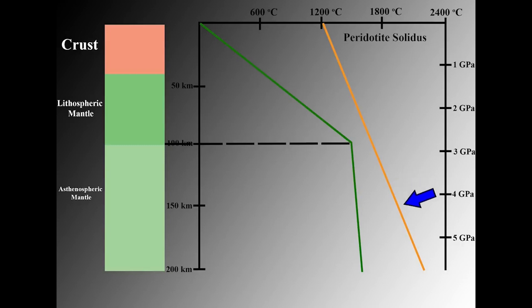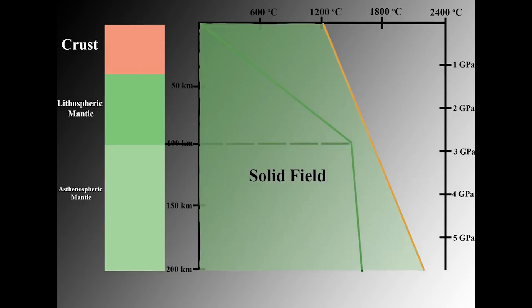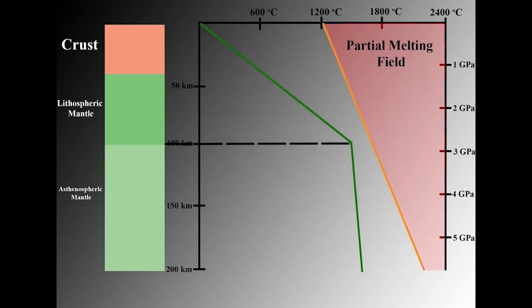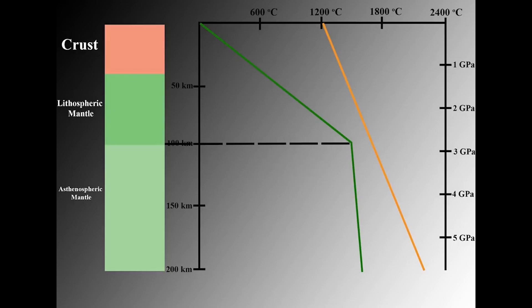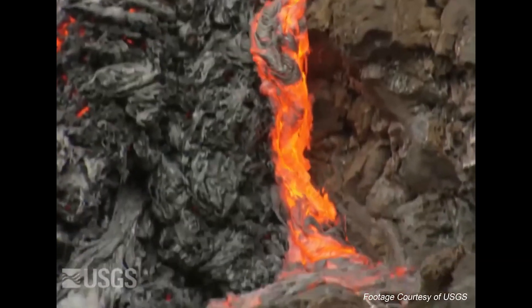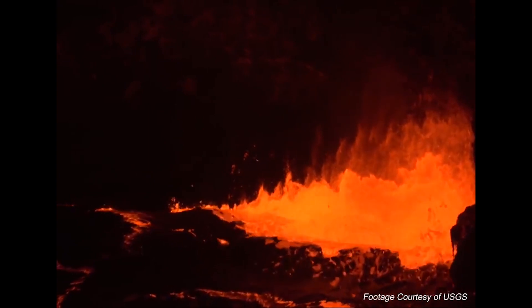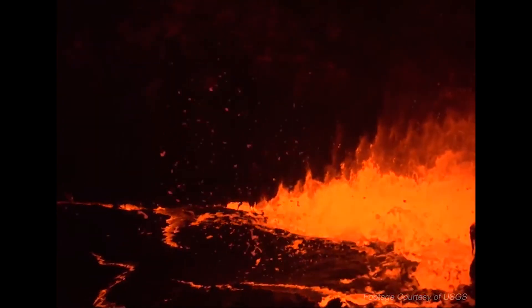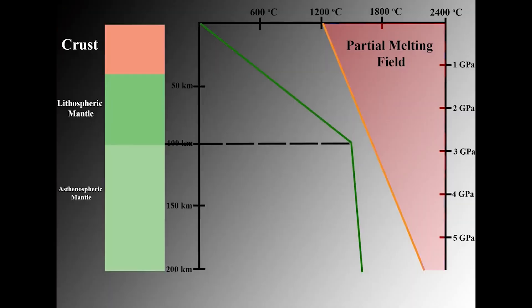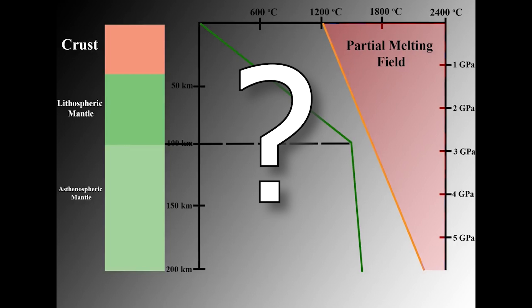The melting point of peridotite varies with pressure and depth in the earth, and is represented on this diagram by a line called the solidus. At temperature and pressure conditions to the left of the solidus, peridotite and thus the mantle will remain solid. At conditions to the right of the solidus, peridotite begins to melt. For magma to be generated from the mantle, its geotherm must cross the solidus. Since basaltic magmas clearly exist, some special condition must allow the geotherm to cross the solidus and cause partial melting. So what are these conditions, and which are related to plate tectonics?